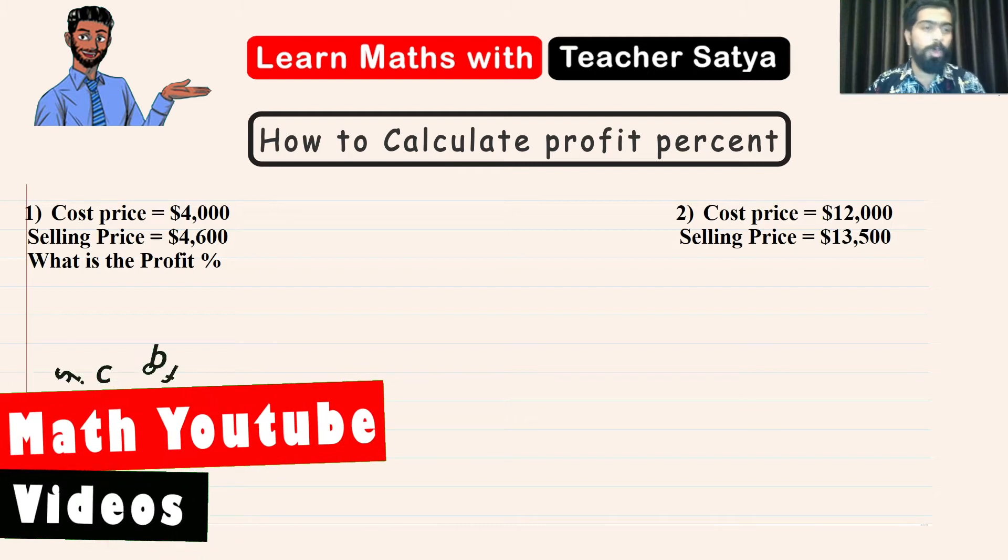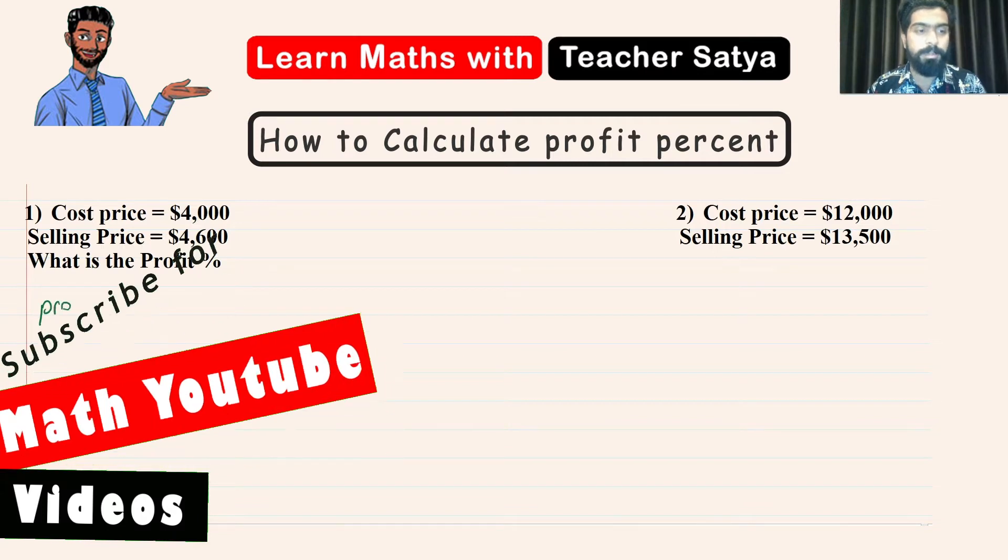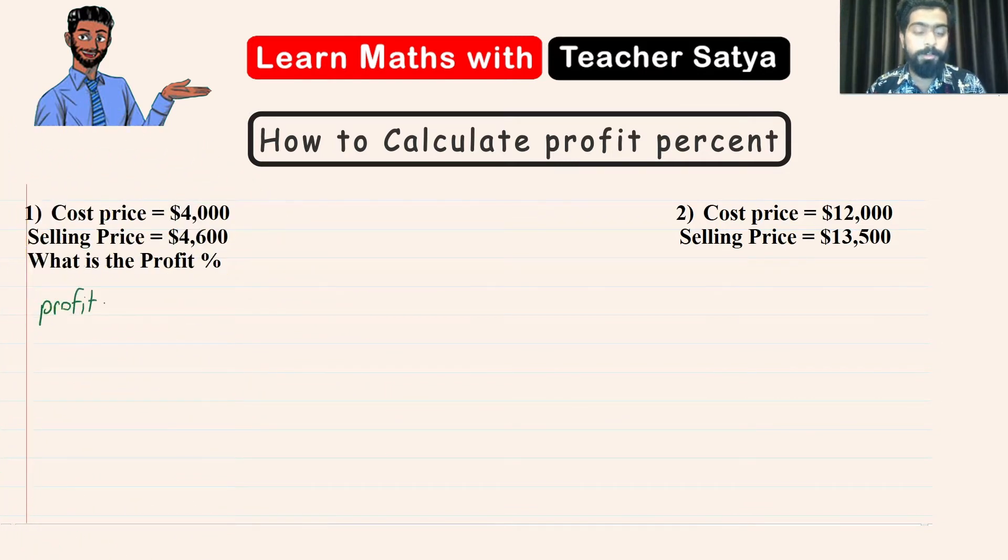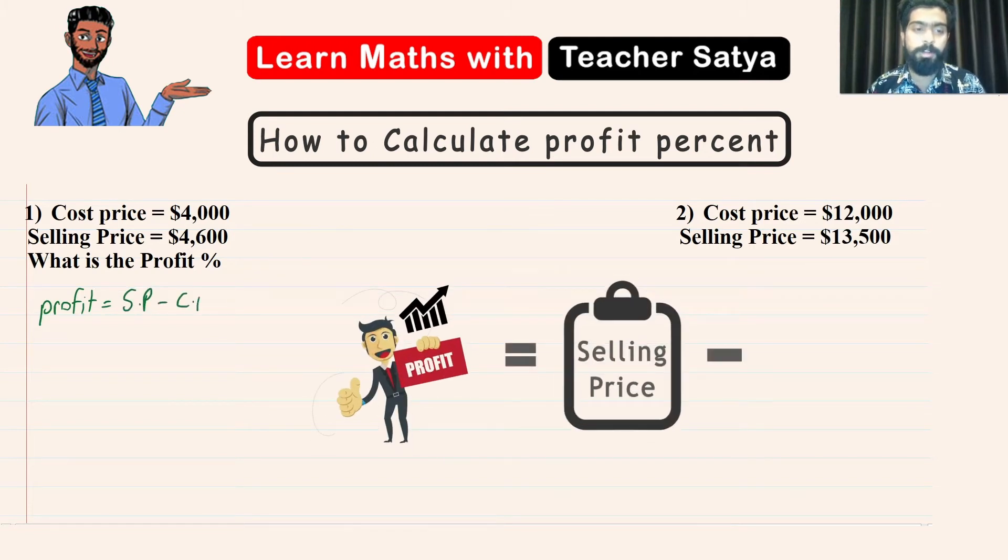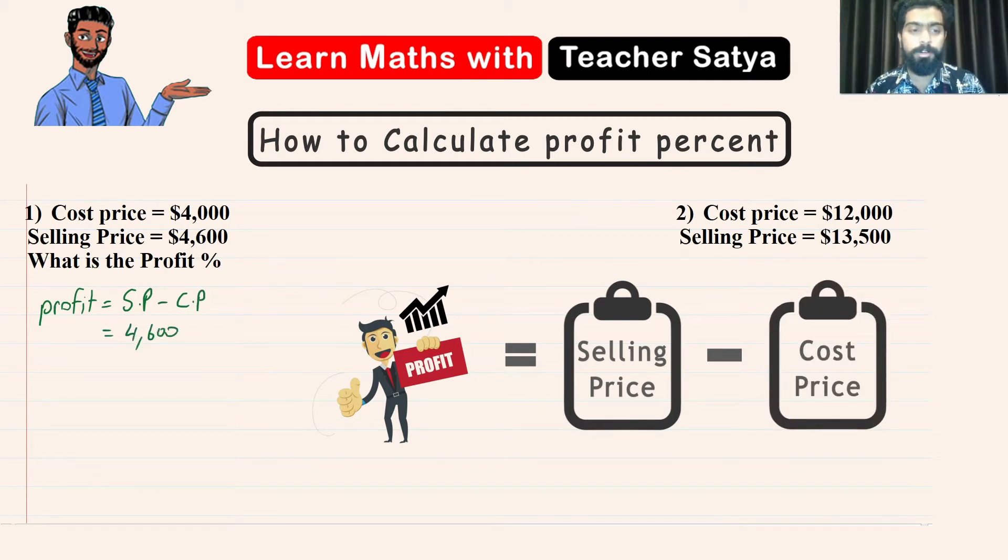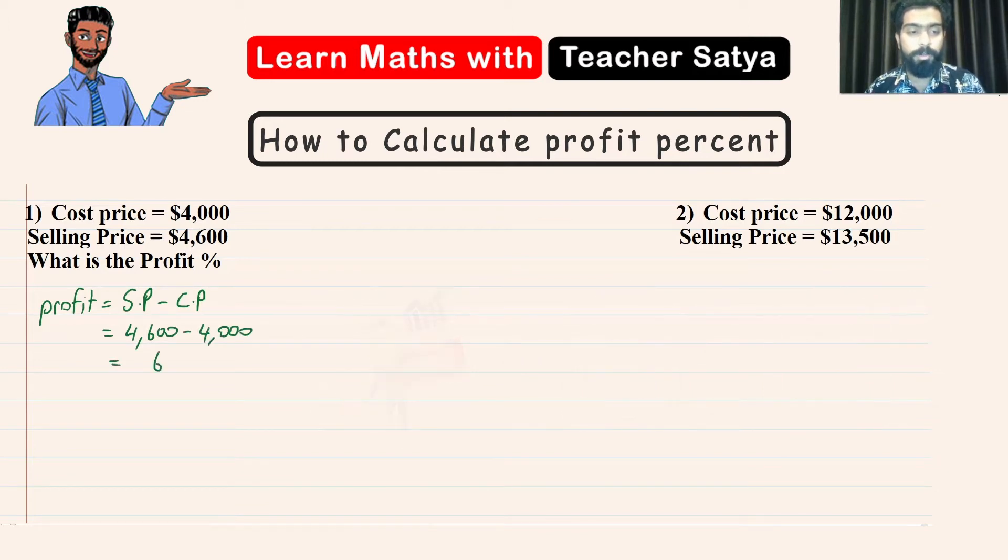Now in this video we have a cost price, we have a selling price and we have to find the profit percent. First of all what we are going to be doing here is we are going to find the profit value. That means how much is the profit. So the profit formula is equal to the selling price minus the cost price. Where we have $4,600 minus $4,000 which is equal to $600. So the profit in this case is equal to $600.